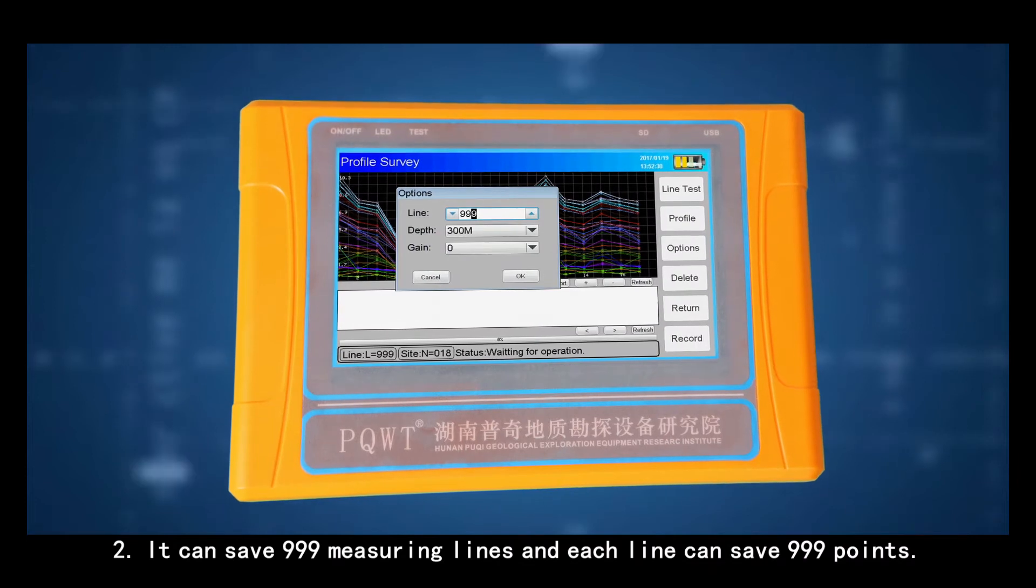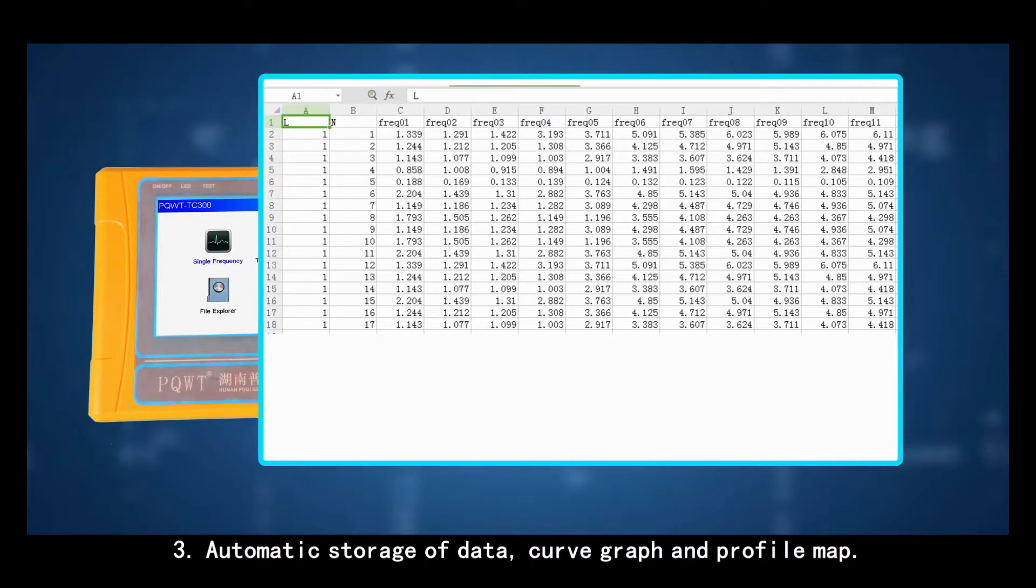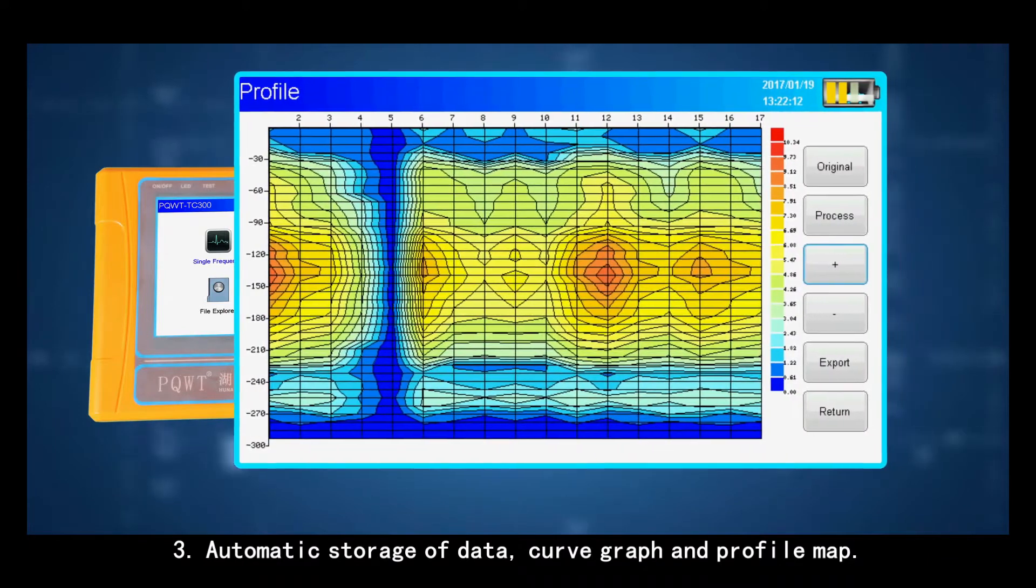Second, it can save 999 measuring lines and each line can save 999 points. Third, automatic storage of data, curve graph and profile map.